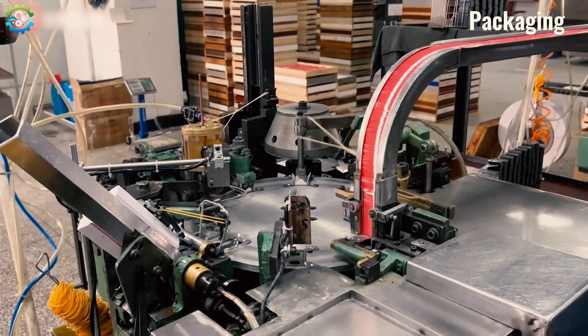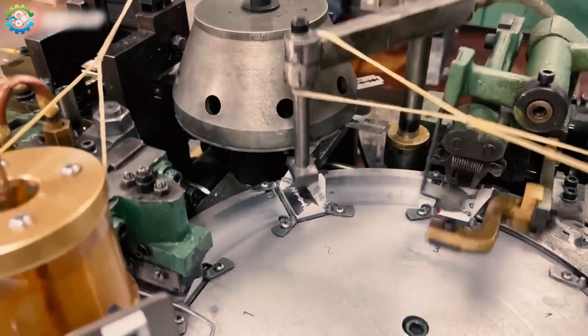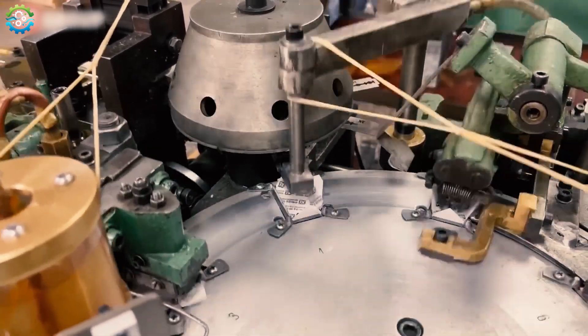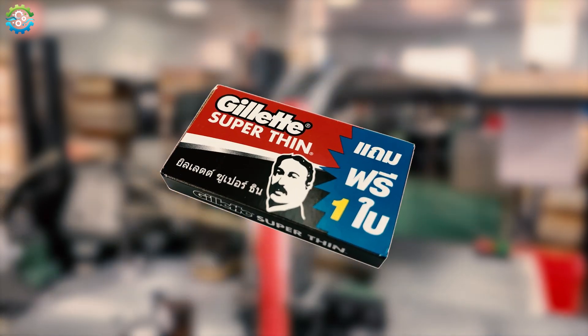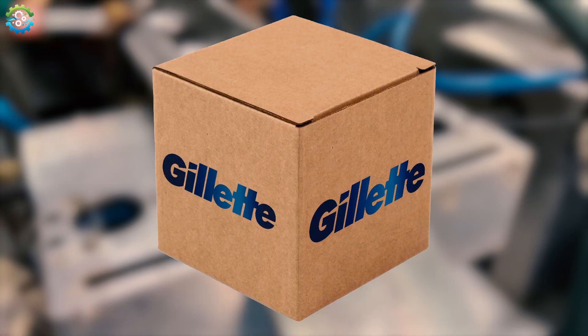Finely automated equipment individually wraps each blade in wax paper for protection during storage. The blades are then placed in containers like plastic bags, boxes, or cartons for final packaging.